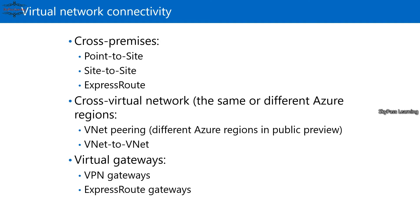For virtual gateway connectivity options in Azure, we have the VPN gateway and the ExpressRoute gateway. VPN gateways support point-to-site, site-to-site, and VNet-to-VNet. For ExpressRoute, you can link a number of virtual networks in your ExpressRoute circuit. I will show how to build this in an upcoming video, likely after covering virtual machine creation and network connectivity.